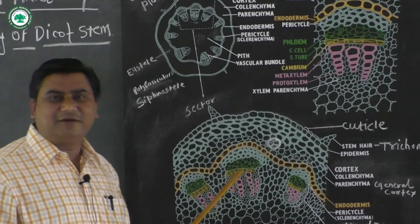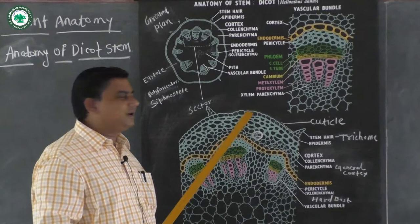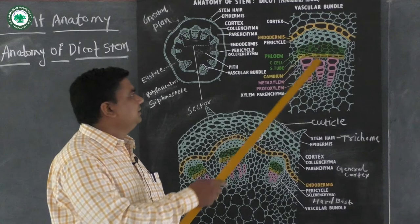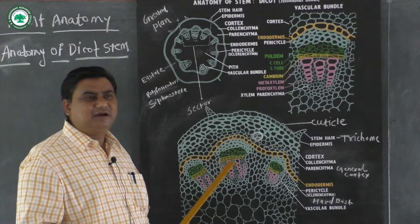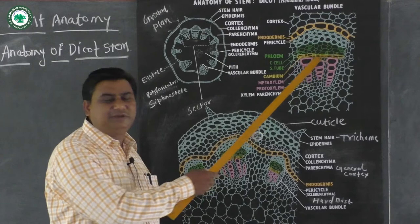In the case of the dicot stem, the vascular bundle is conjoint, collateral, and open. Conjoint vascular bundle means the xylem and phloem lie on the same radius. In the monocot stem also, there is conjoint collateral but a closed type of vascular bundle. In the dicot stem, there is the conjoint collateral open type of vascular bundle due to the presence of this particular cambium strip.